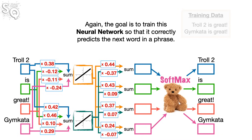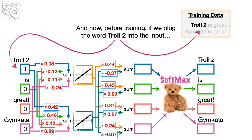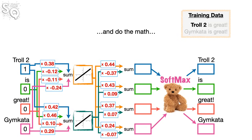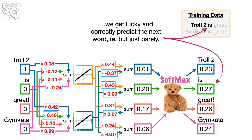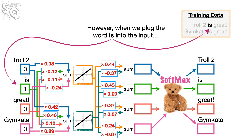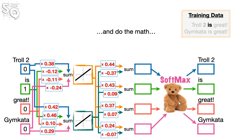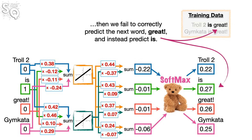The goal is to train this neural network to correctly predict the next word in a phrase. Before training, if we plug Troll2 into the input, we get lucky and correctly predict the next word 'is', but just barely. However, when we plug 'is' into the input, we fail to correctly predict 'great' and instead predict 'is'. So we need to train this neural network.